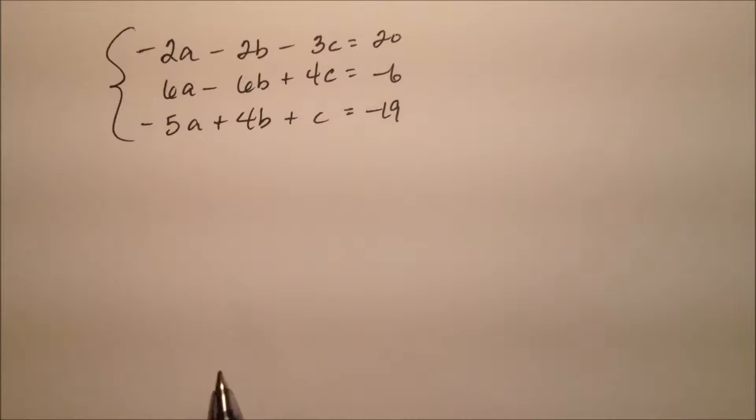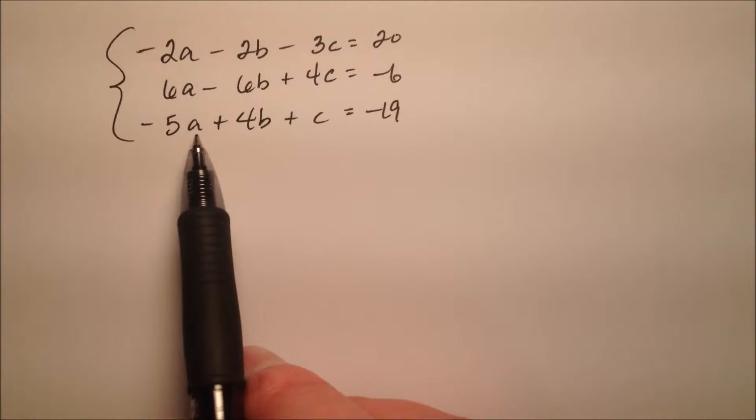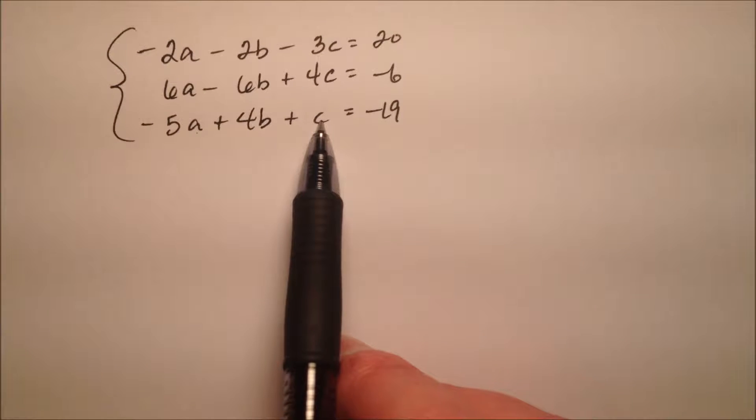Here we have a system with three equations and three unknowns, and our variables here are a, b, and c.